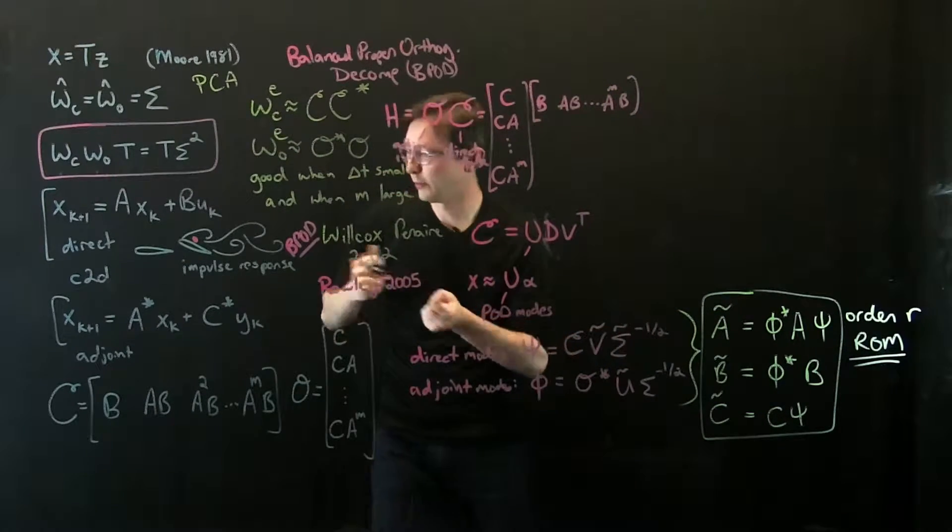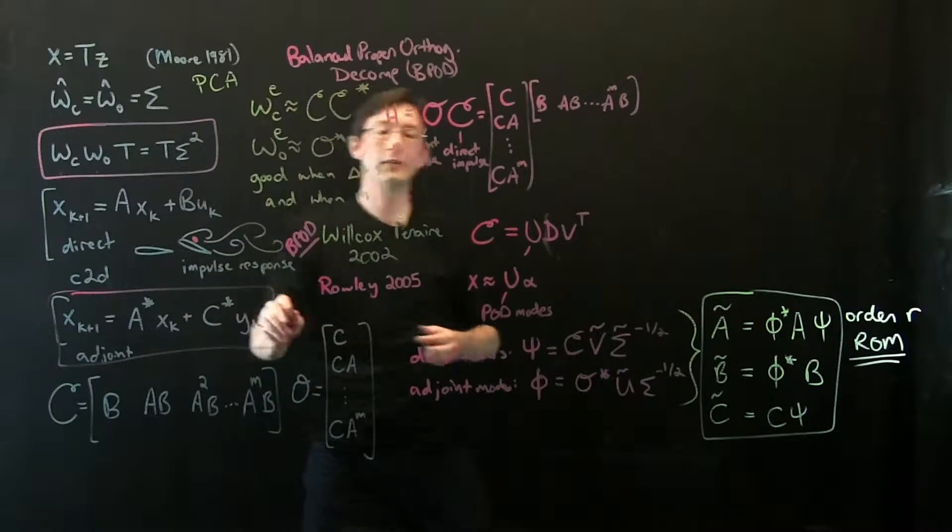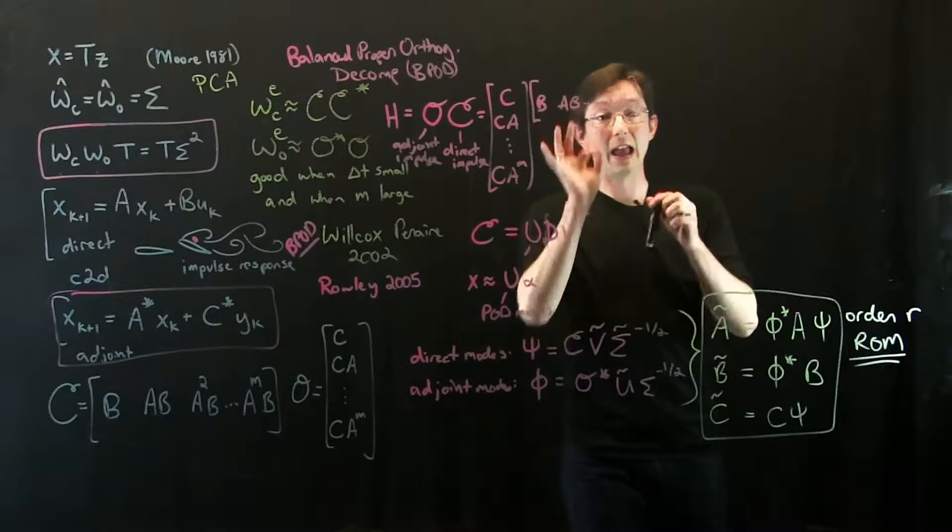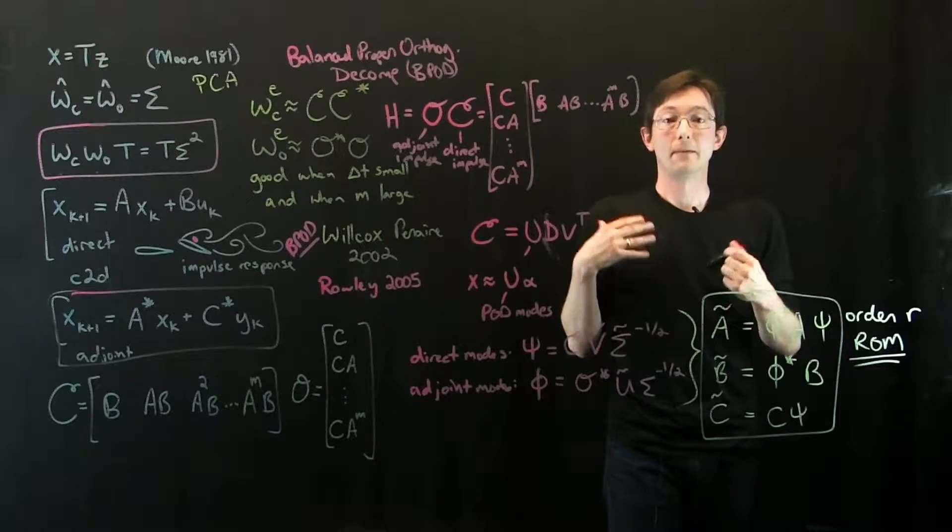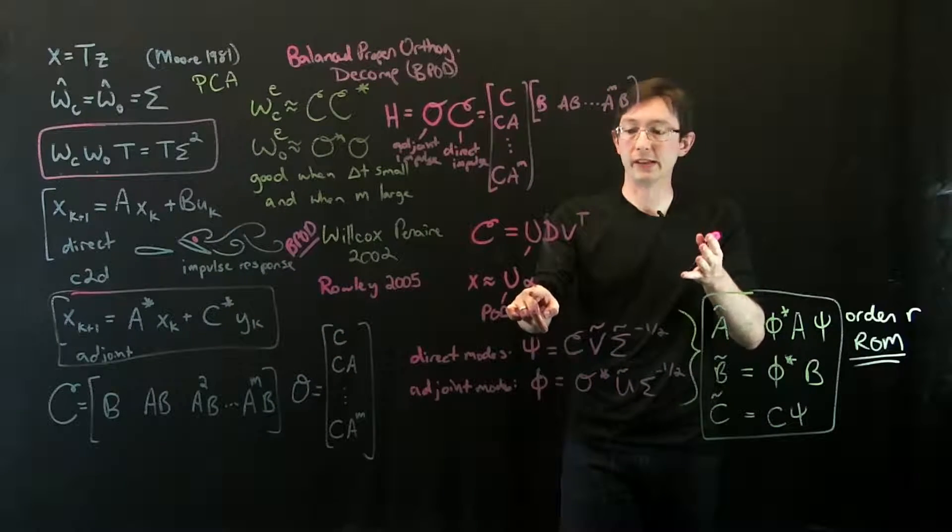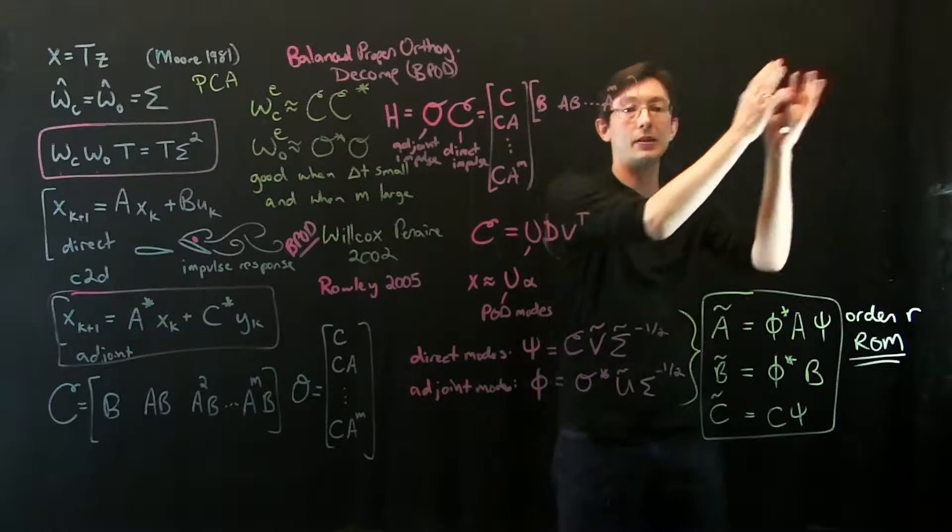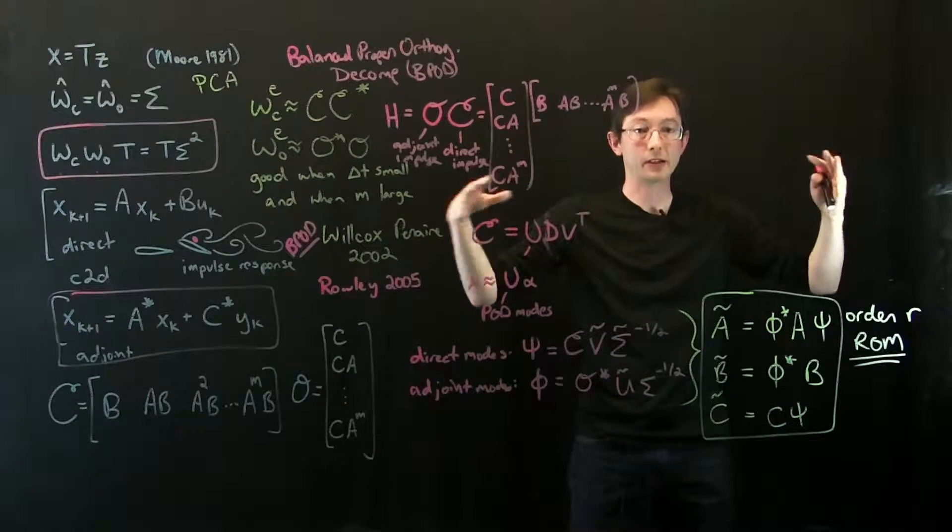What Rowley realized was that instead of impulsively exciting every element of my state independently, if I'm measuring the full state, I can do these coordinated impulses where I impulsively excite these alpha modes instead. I can excite POD mode 1 and see how that rings through the dynamics.